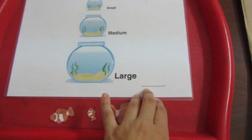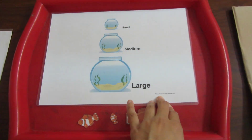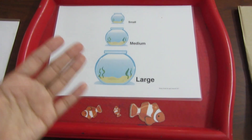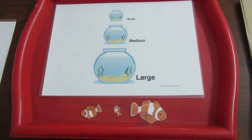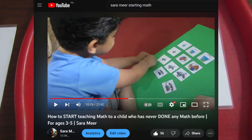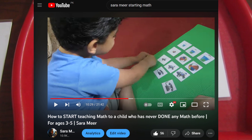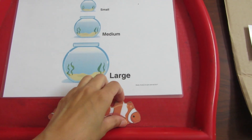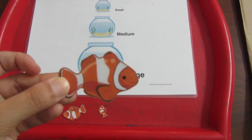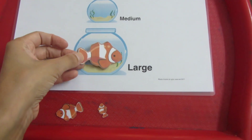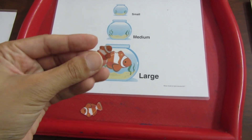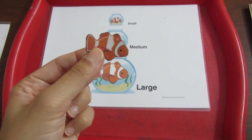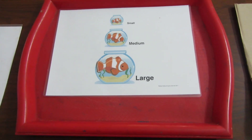The next one is from JDA — it's a teacher's shop. I bought a PDF file, printed it, and laminated it. It's a very simple activity: small, medium, large. As I explained in the starting math video, we arranged small, medium, large cards. Once he understood that concept, he was able to do this easily. You match the large fish to the large aquarium, the small fish to the small aquarium, and the medium fish to the medium aquarium.